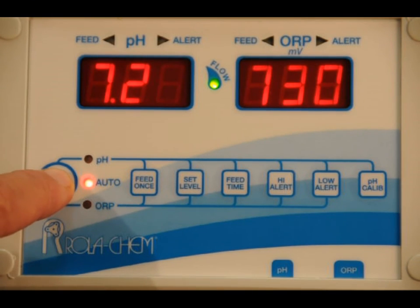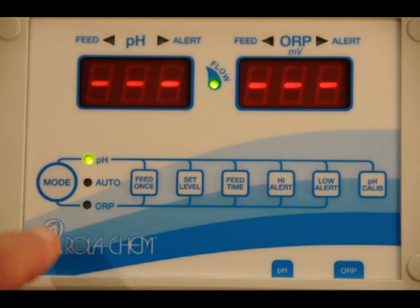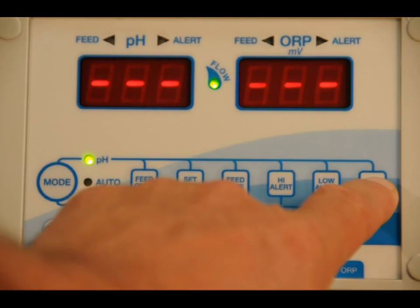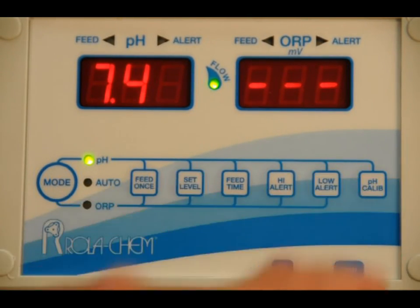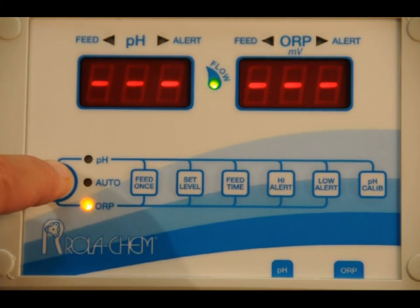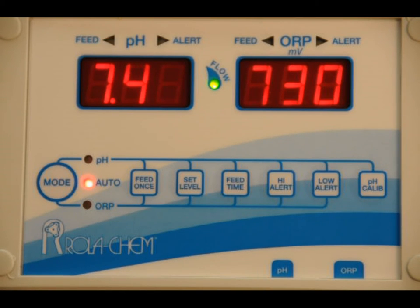What you'd want to do is hit the mode button so the LED for pH is illuminated and go over to your calibration button, the far one on the right, and then just adjust it up to 7.4. And at 7.4 you go back to auto and it's going to match the body of water at 7.4.